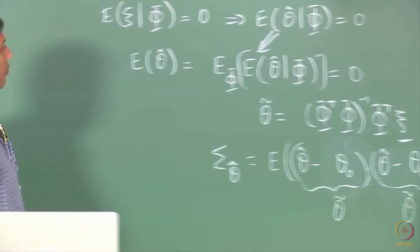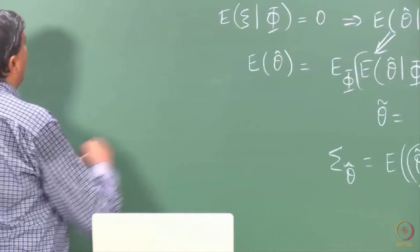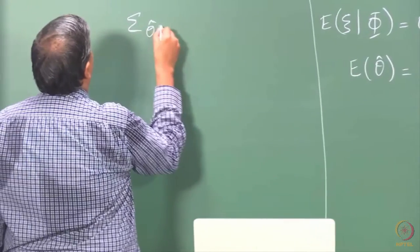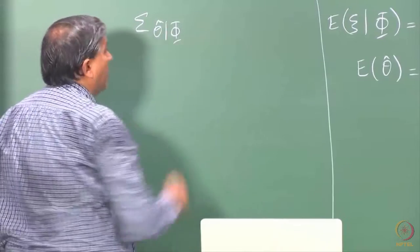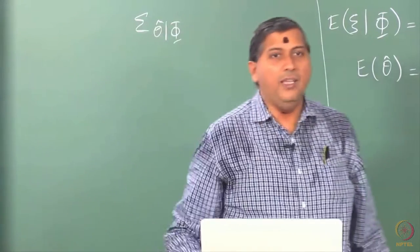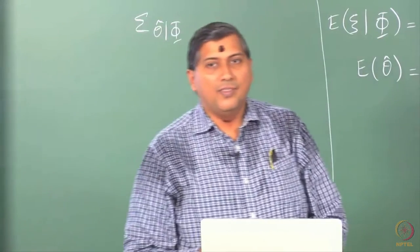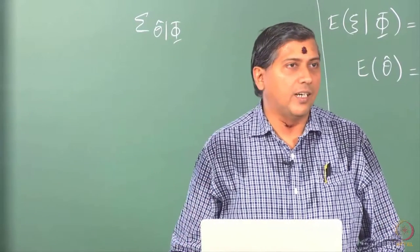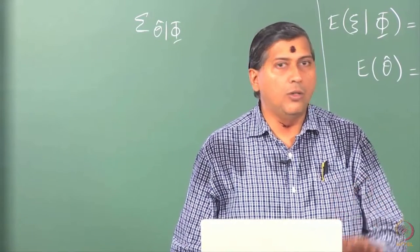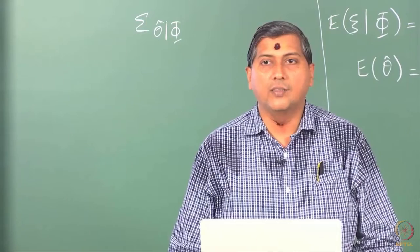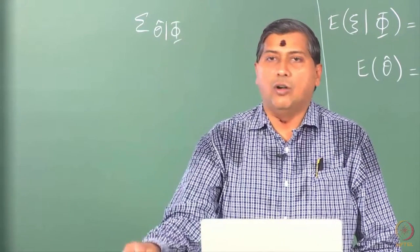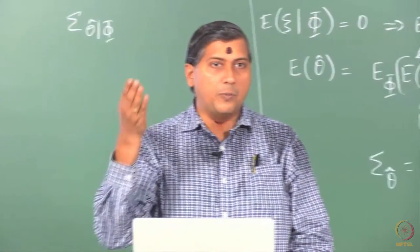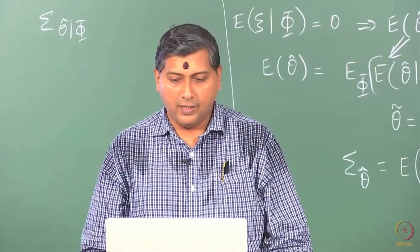We fix phi — for a given set of regressors, what is the variation in theta hat that we see? Although we fix the regressors, the equation errors are going to change, and that is why we expect to see variation in theta hat. This brings us back more or less to the deterministic case because we are fixing phi, and then evaluating this expression becomes much simpler.